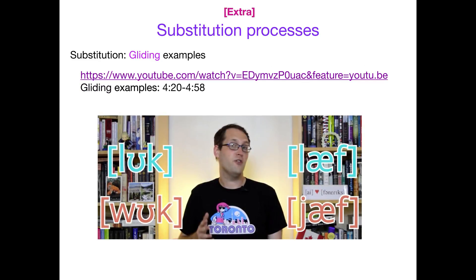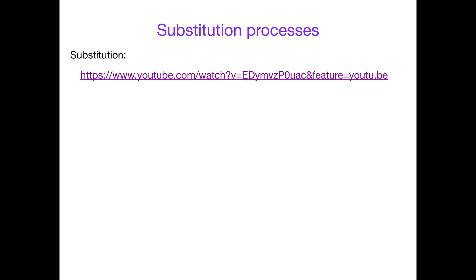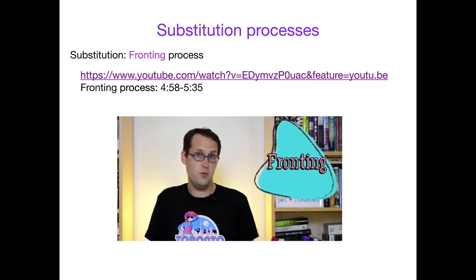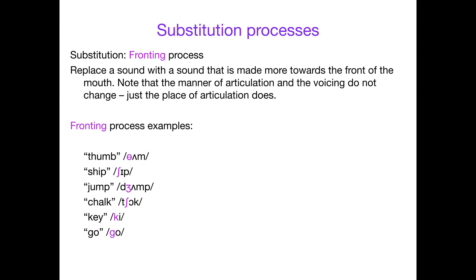Here are some IPA examples showing 'ya' or 'wa' appearing where the liquid was in each place through the process of gliding. Now let's talk about fronting. Fronting is really about the place of articulation. Remember that in the vocal tract, labial sounds are at the front, then you move back to interdental, then alveolar, then post-alveolar, then velar, and so on.